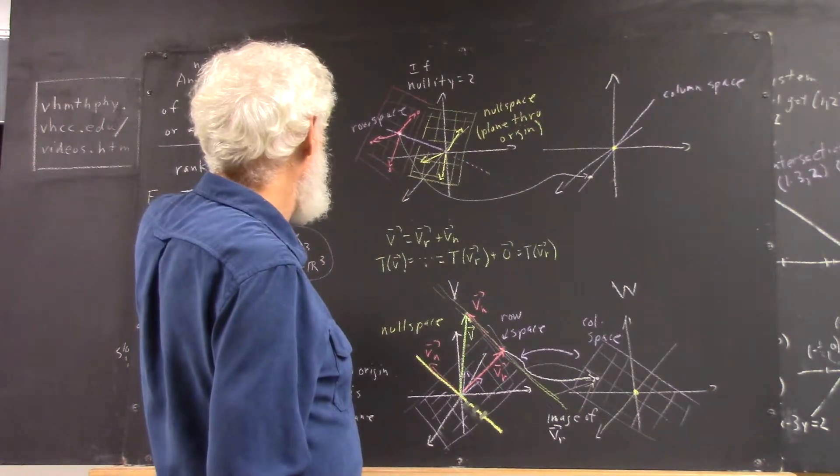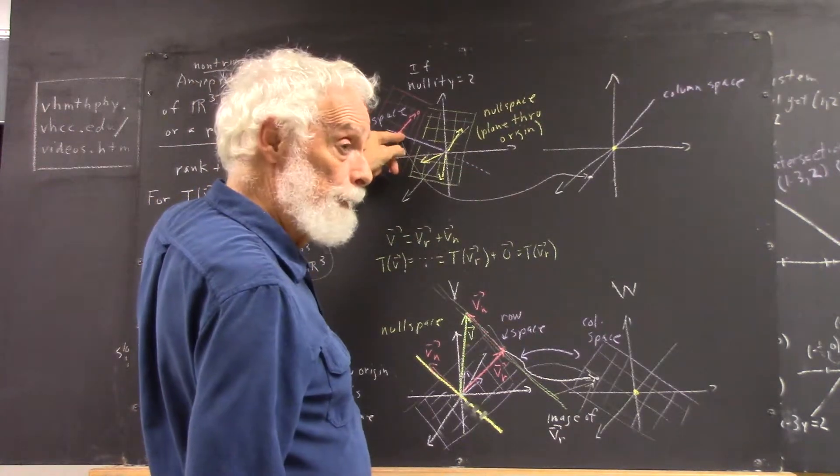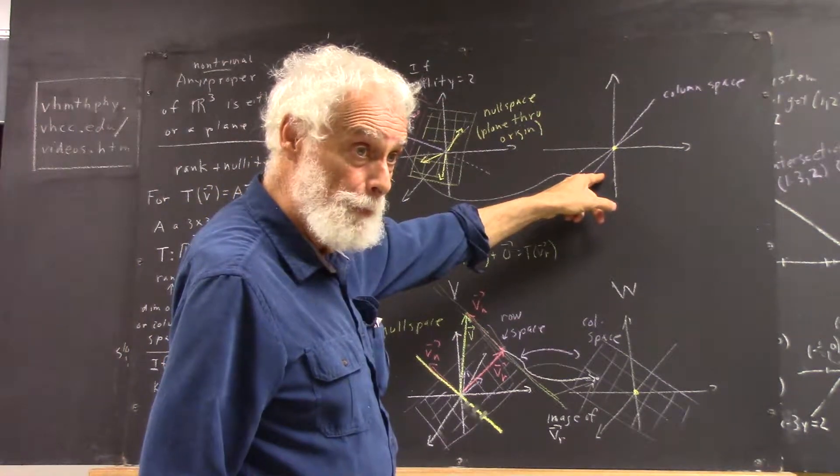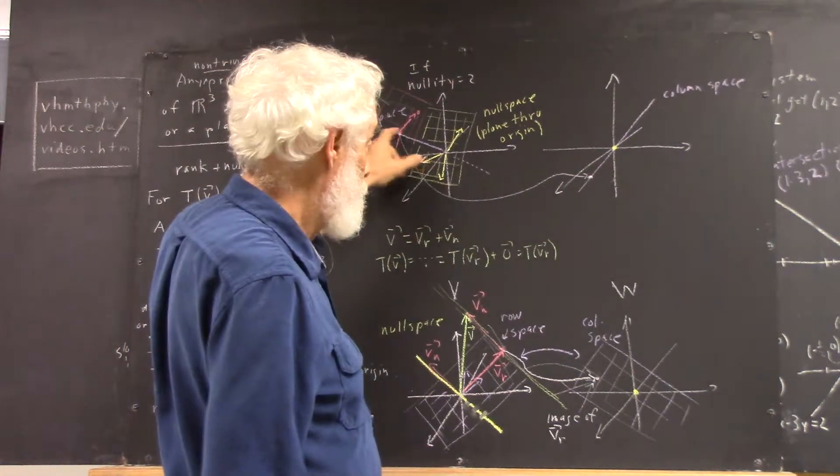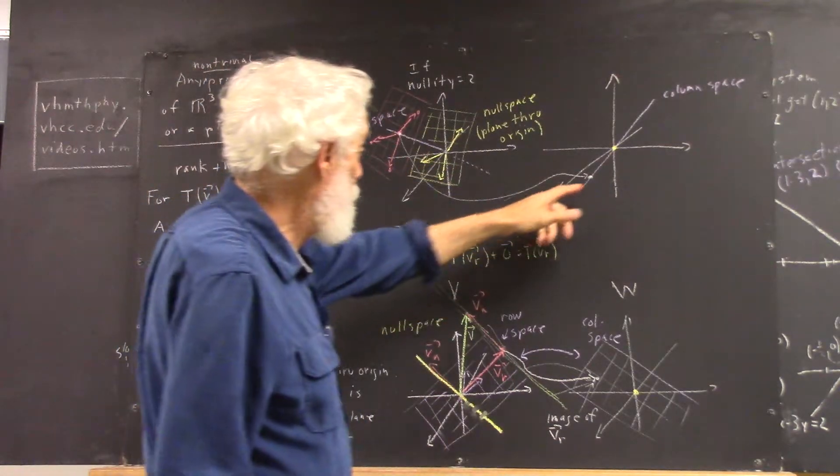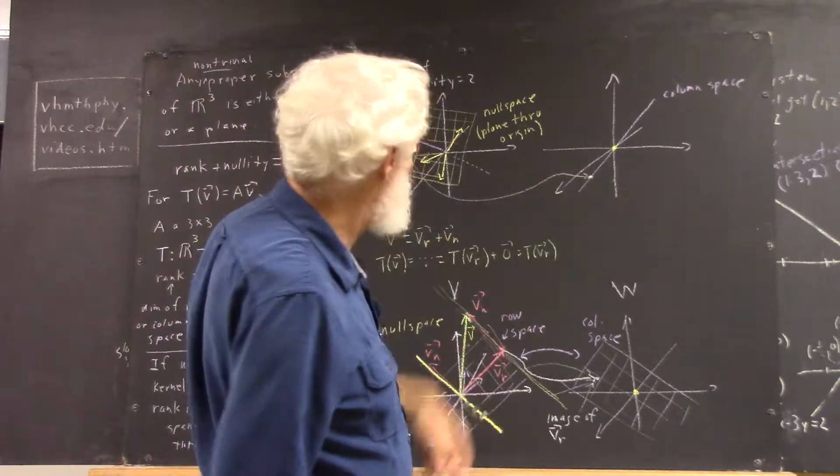So we have a row space and a plane. Now, if we take any point on this line, on the row space, it'll map to some point of the column space, and of course vice versa. But there are a bunch more points that also map to this point on the column space.